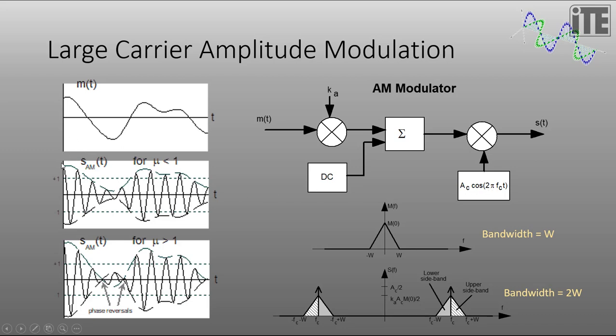And then we simply take that scaled message signal shifted by DC and we multiply that with the carrier signal. So you can see here, here's the scaled message signal shifted upwards and it's multiplied by the carrier. And we end up with this modulated amplitude modulated signal here. Now depending on the value of KA and the value of AC, we get what's called the modulation index. And if the modulation index is below one, we end up with this kind of situation where the envelope of the signal is always above the x-axis.